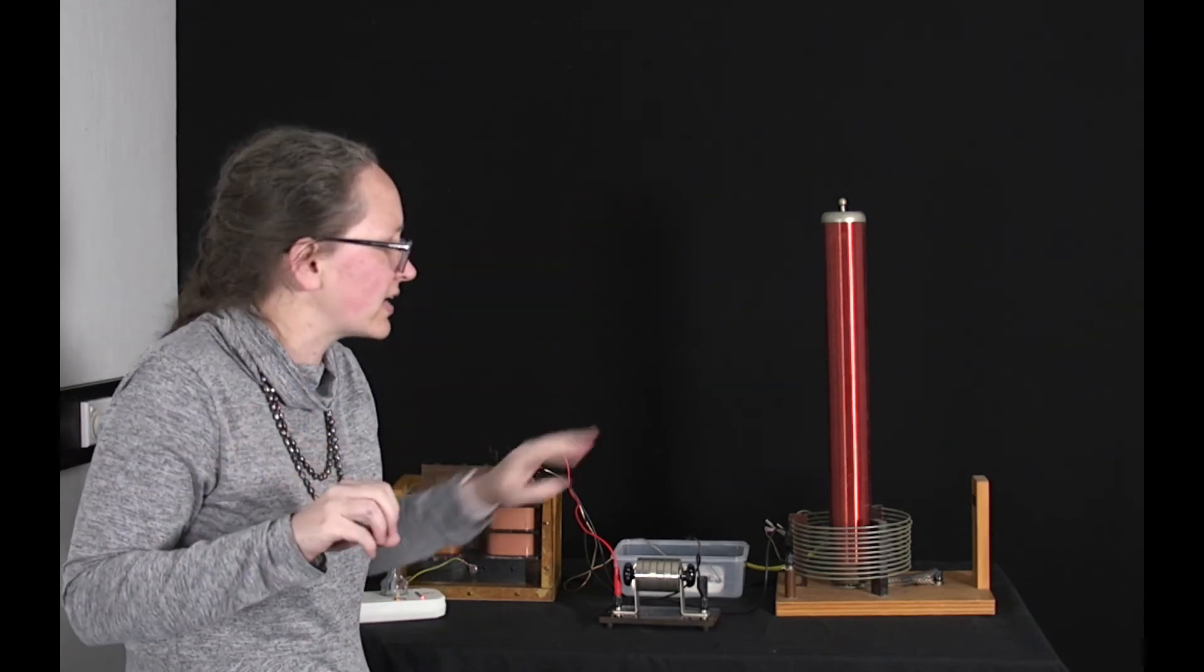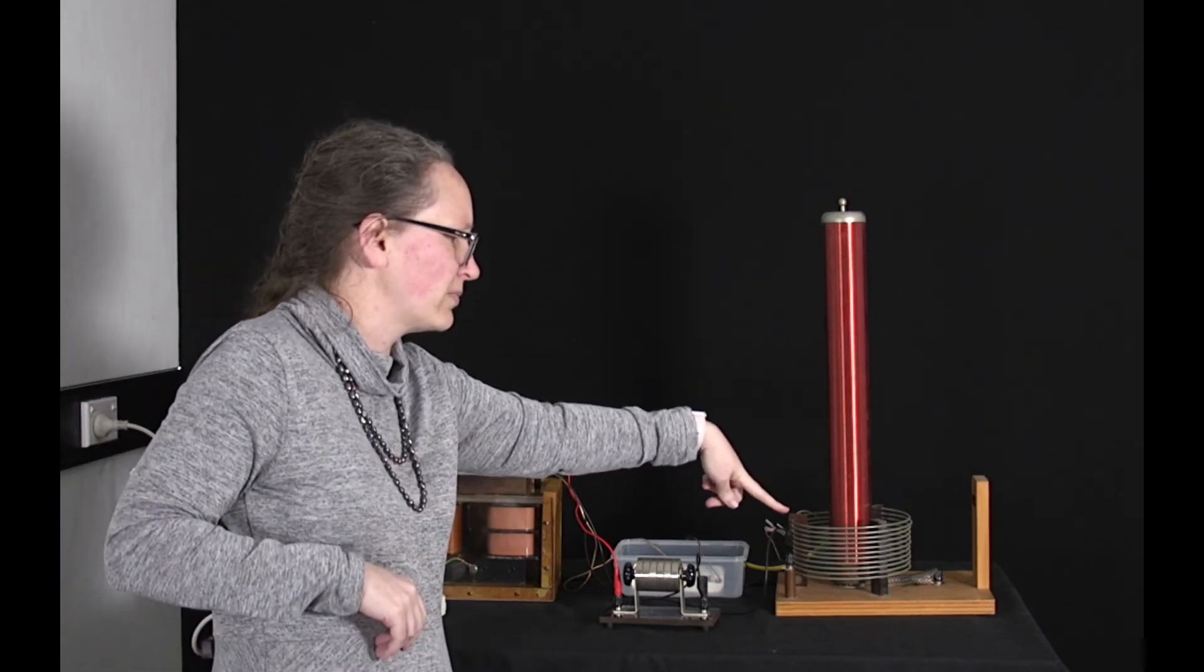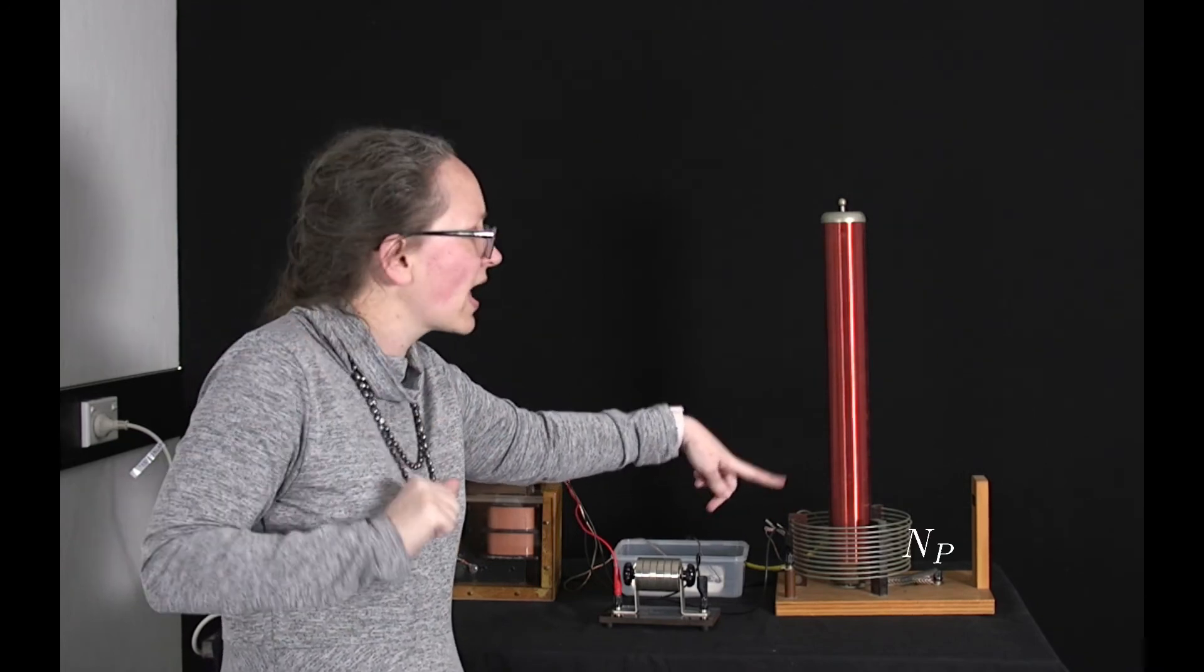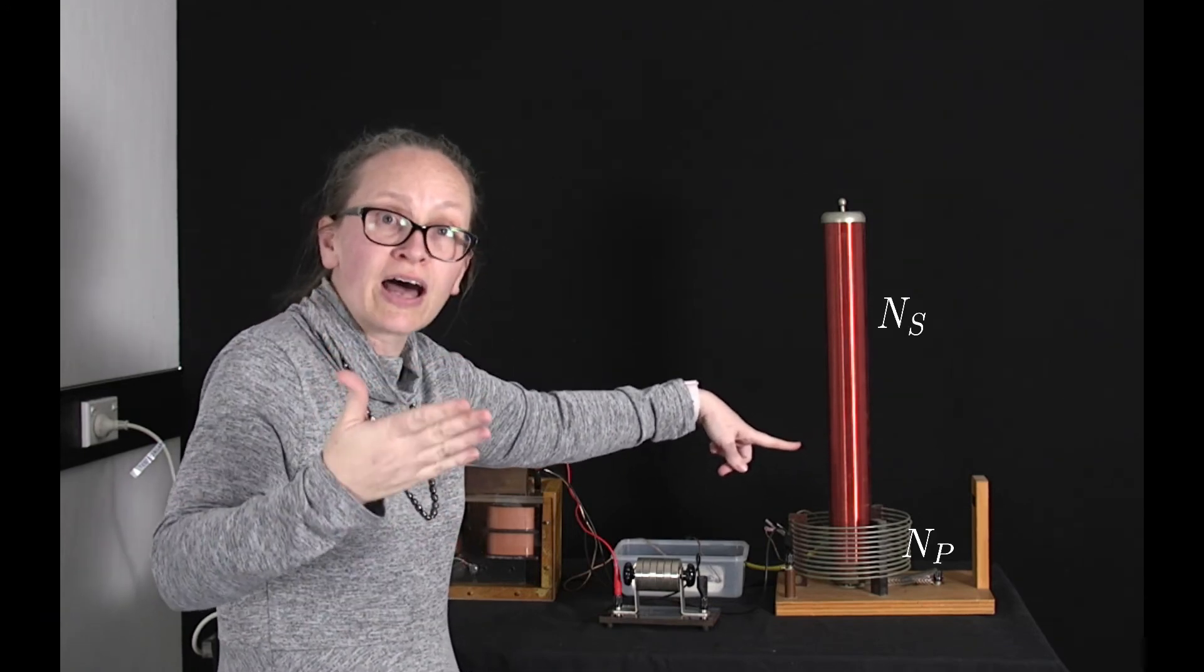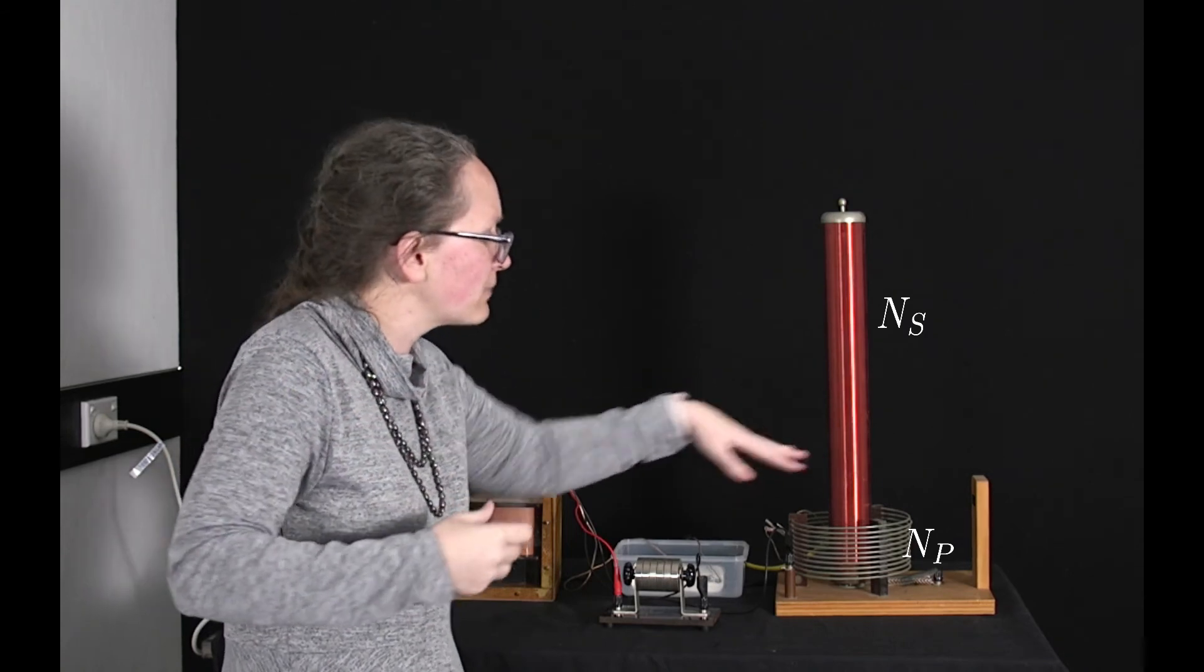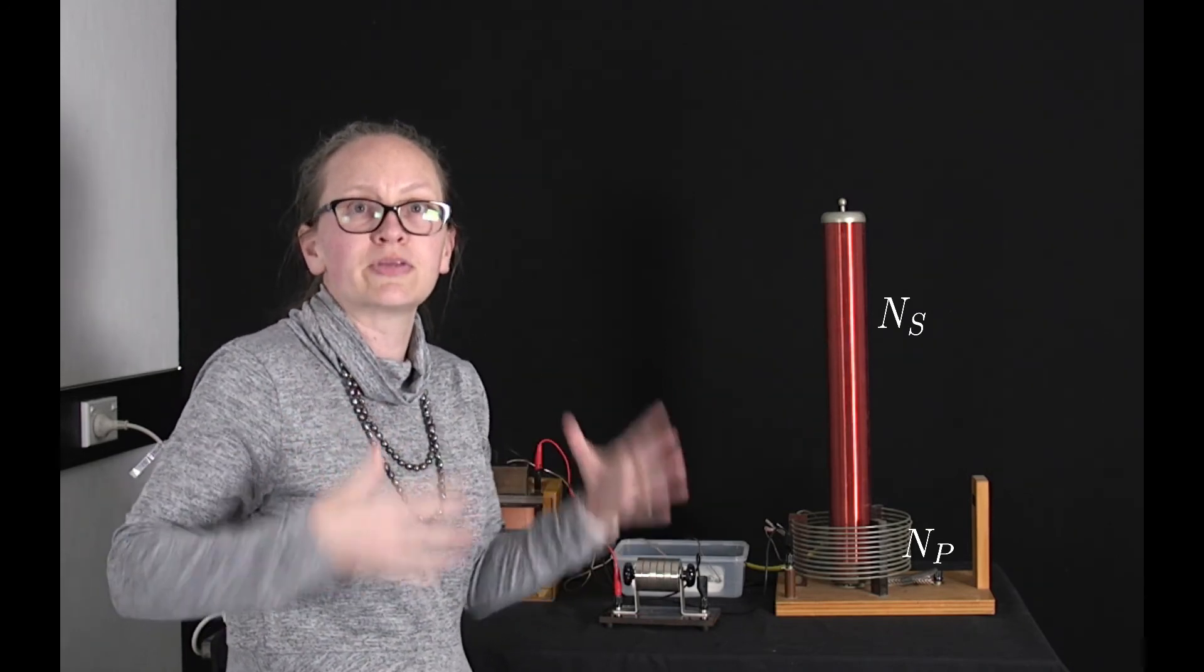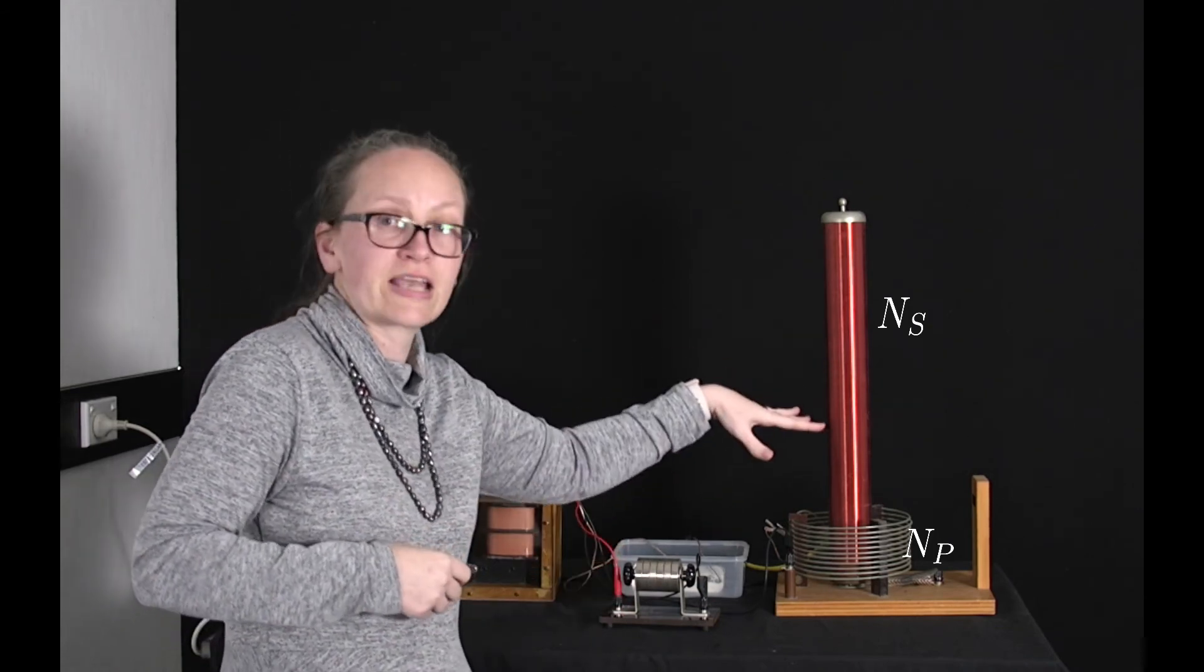So let's just consider exactly how the transformer works. So the transformer here consists of a primary coil with a small number of turns so we'll call the number of turns in the primary coil NP and a secondary coil with a much larger number of turns which we'll call NS. Now because these are wrapped about the same core we've got essentially the same changing magnetic flux through both the primary coil and the secondary coil.